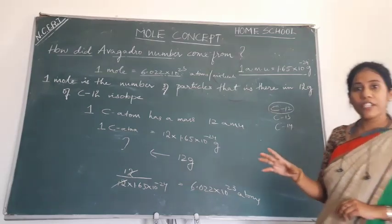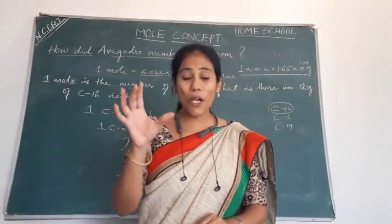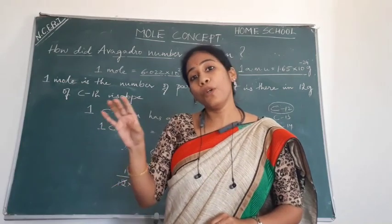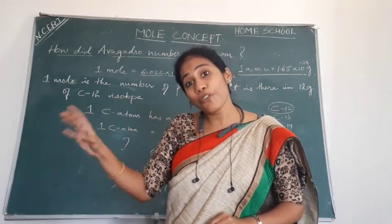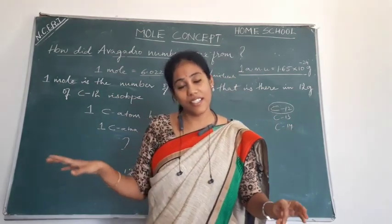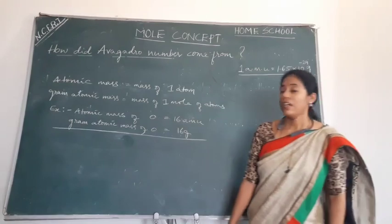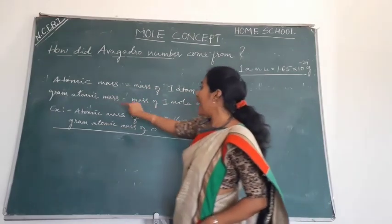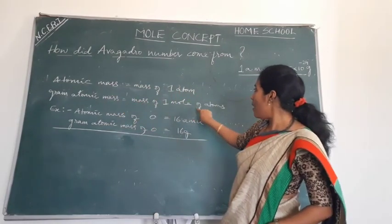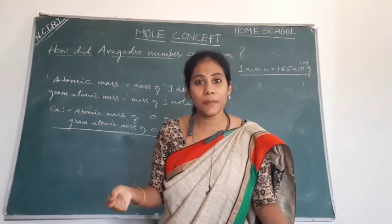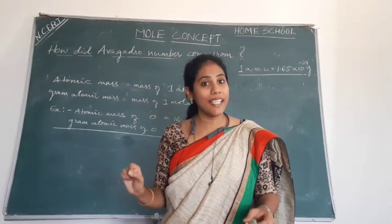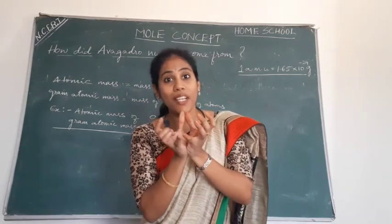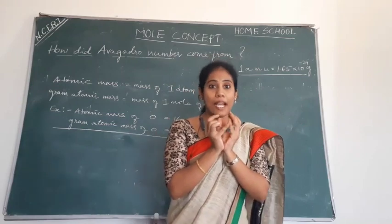In the last video, I mentioned that atomic mass and gram atomic mass are different by definition, but both have the same digit used practically in calculations. The reason: atomic mass is defined as mass of one atom, while gram atomic mass is defined as mass of one mole of atoms — that is 6.022 into 10 to the power of 23 atoms. That mass we call gram atomic mass.